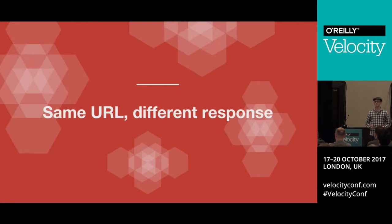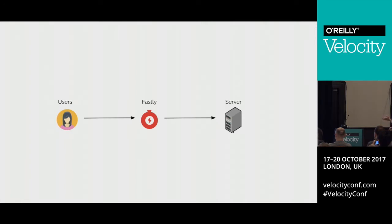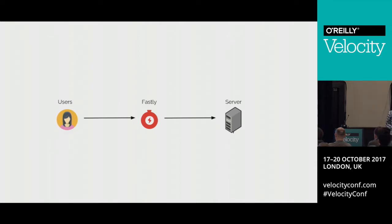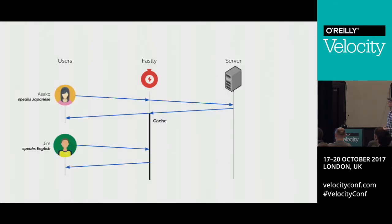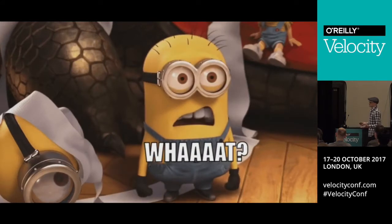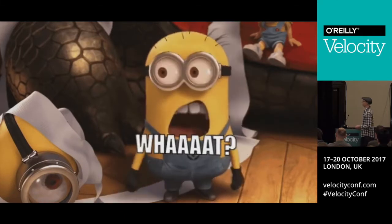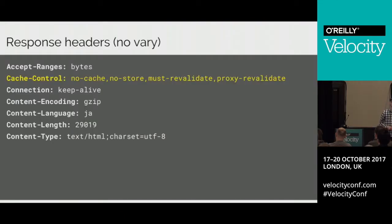This sounds fine until you insert caching into the middle of that exchange. Users typically don't interact directly with servers for large sites — they go through a content delivery network such as Fastly. That cache will store responses from the origin server and use those to satisfy future requests. So if someone who speaks Japanese requests the page first, we fetch and cache the Japanese version. Then someone who doesn't speak Japanese comes along and they will be unimpressed. A typical way of solving this is to just make the page not cacheable — but that's a shame for high-traffic pages.